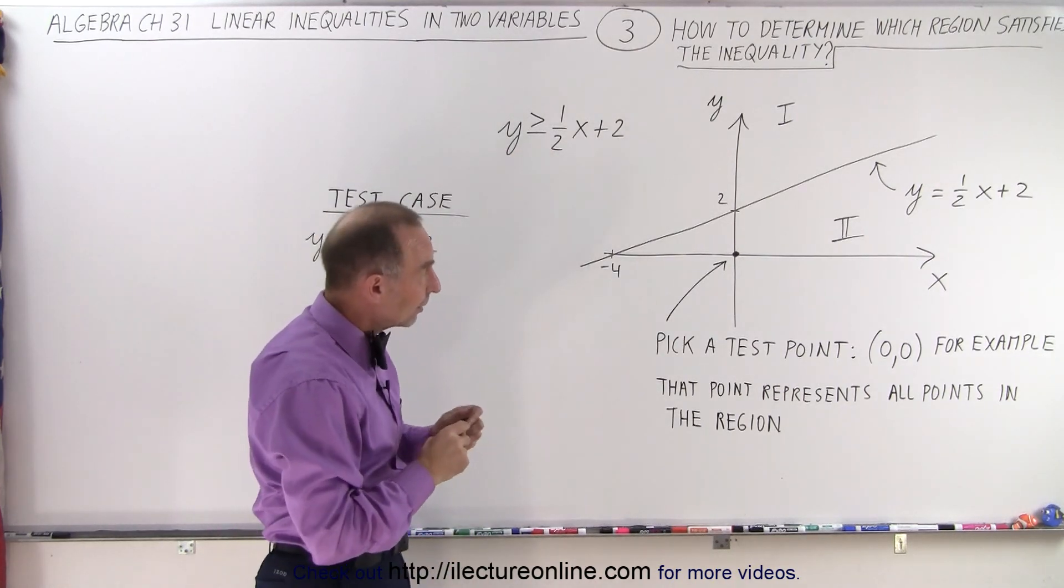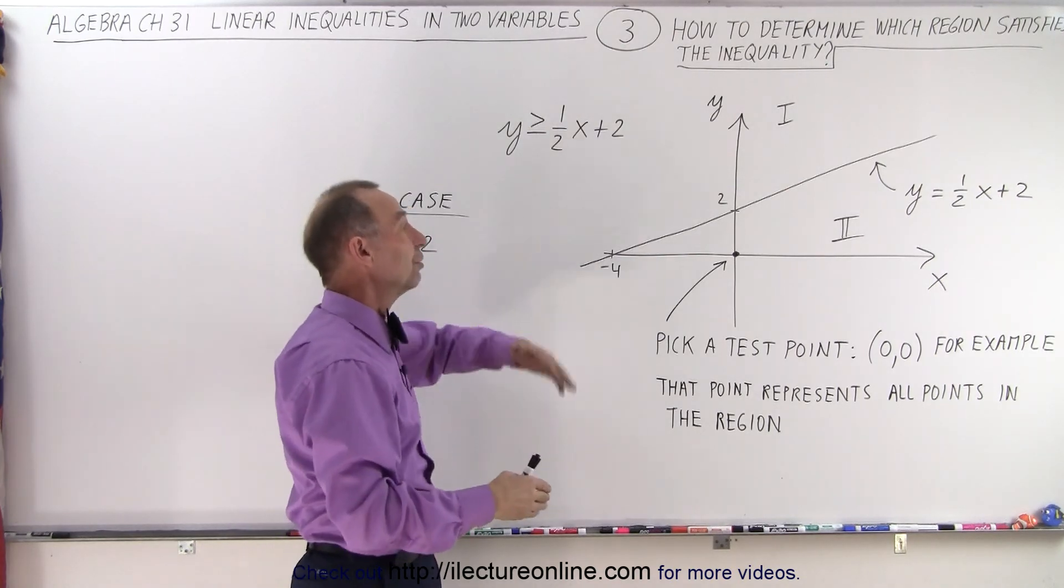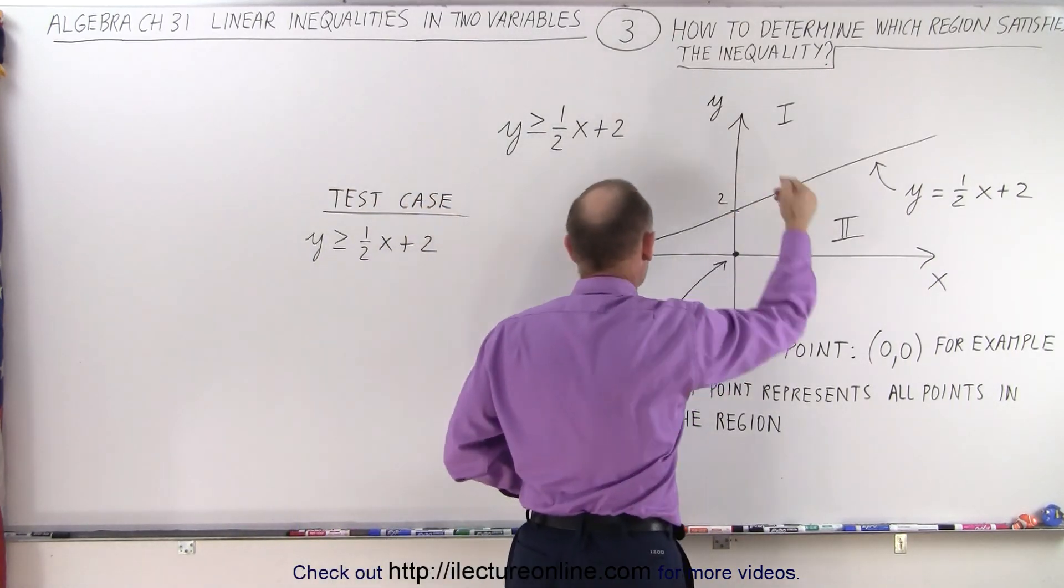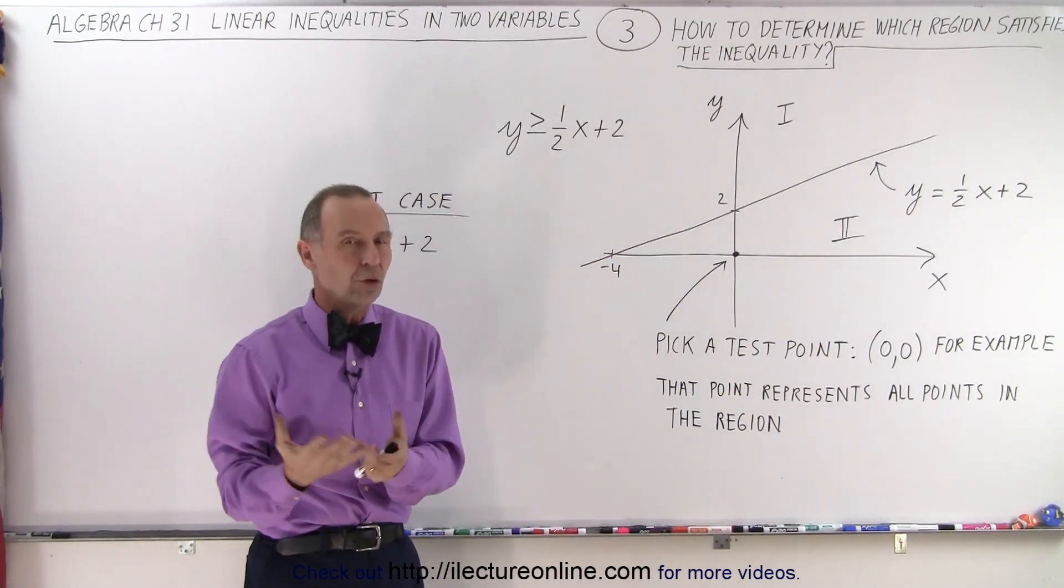The dividing line will divide the xy plane into two regions, region 1 and region 2. It doesn't matter which one you label 1 and which one you label 2. Then you pick a point in one of the two regions.